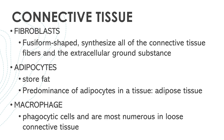For the cells in the connective tissue, please note that fibroblasts and adipose cells are permanent or resident connective tissue cells. Your neutrophils and eosinophils and the rest migrate from the blood vessels and take residence in the connective tissue of different regions of the body. Your fibroblasts are fusiform-shaped, and their function is to synthesize all of the connective tissue fibers and the extracellular ground substance, including your collagen fibers and the rest of your extracellular matrix components.